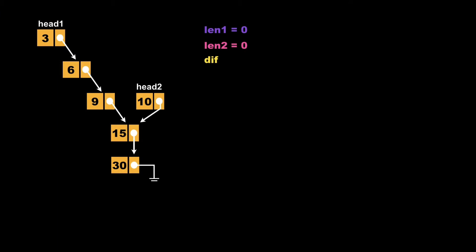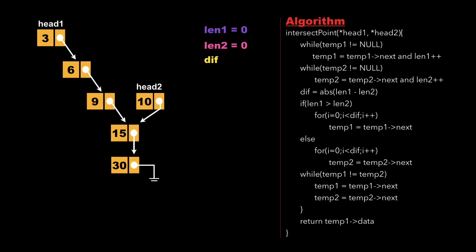Let's consider an example with linked list one as 3→6→9→15→30 and linked list two as 10→15→30. We declare variables length1 and length2, initialized to zero, to store the lengths of linked list one and two respectively, and another variable called difference. The function intersection point takes arguments head1 and head2. We create two temporary node pointers and point them to head1 and head2.